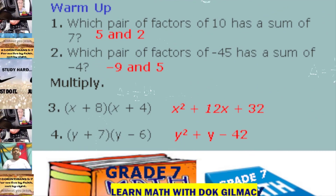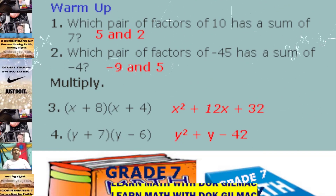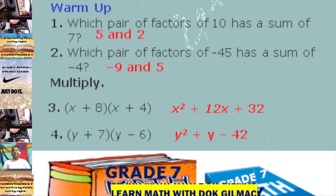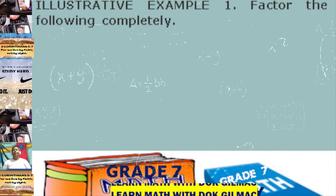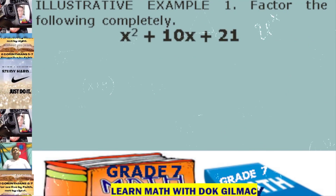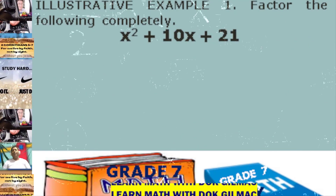This time, we're going to factor quadratic trinomials. Consider illustrative example number 1. Factor the following completely: x squared plus 10x plus 21.